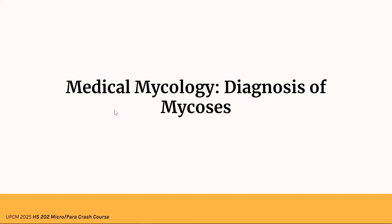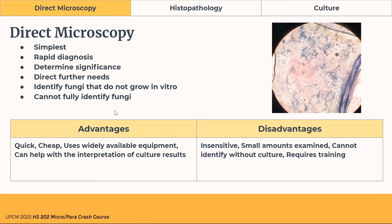Now let's talk about the diagnostics of mycosis. There are three main methods of diagnosis. First is direct microscopy — it's the simplest and most rapid. It determines the significance and further needs of the patient, and identifies what shouldn't be there. The caveat is it cannot fully identify fungi because it's based only on morphological features. It's cheap and widely available, and useful when paired with culture. Disadvantages include the limited sample examined and the requirement for training to identify what you're looking at.